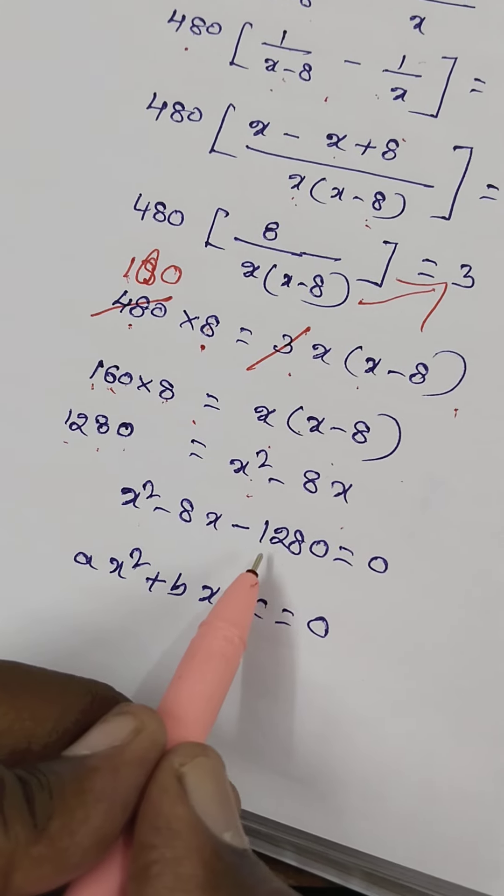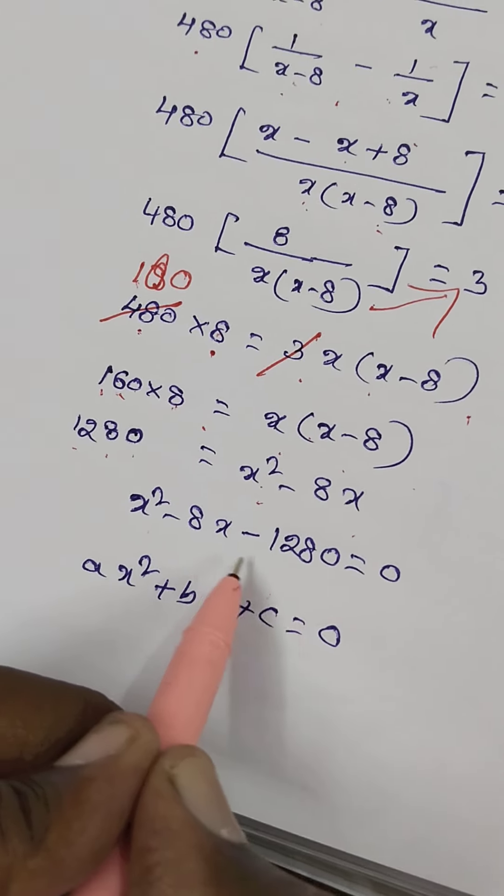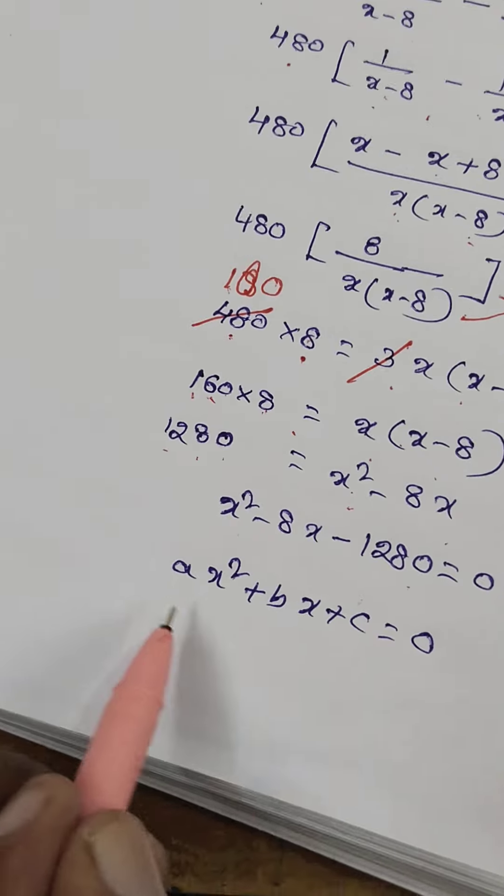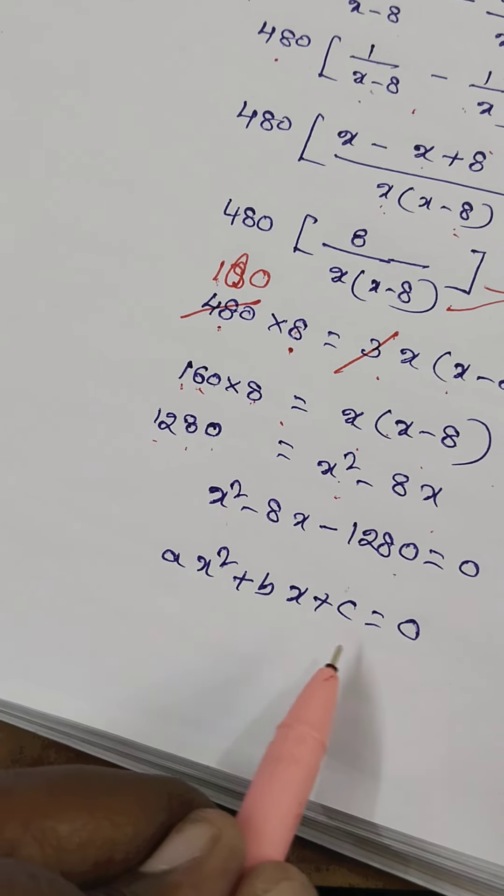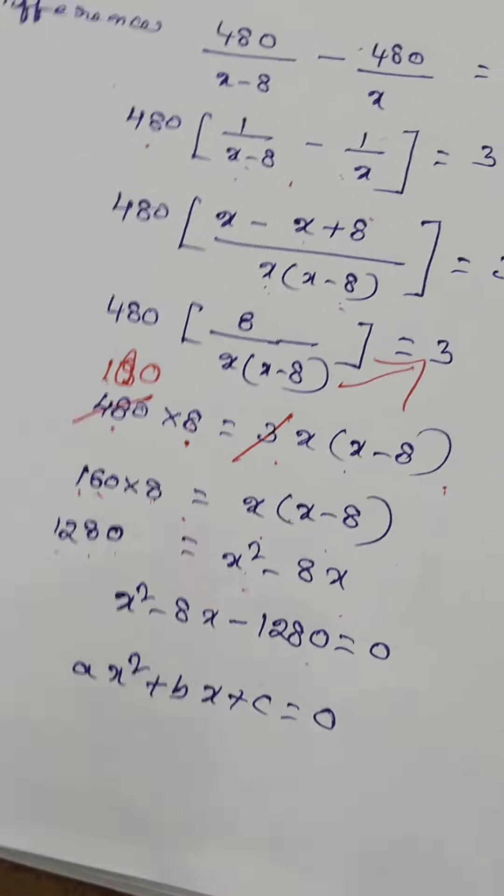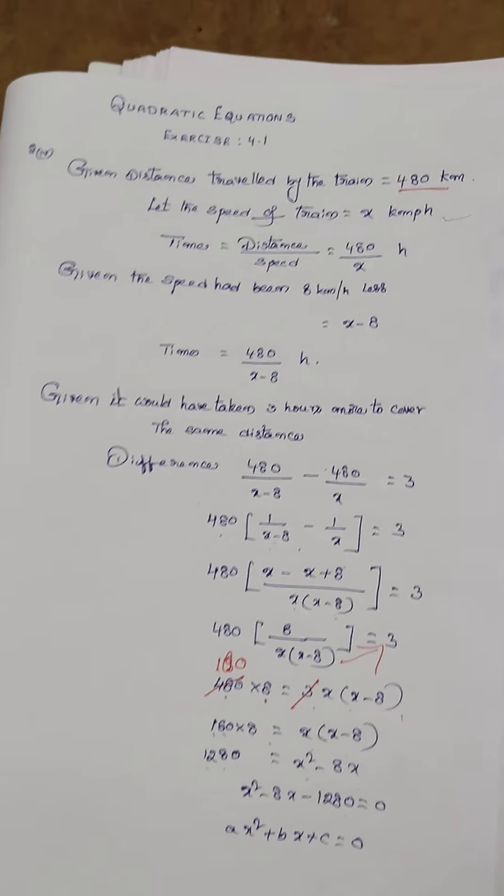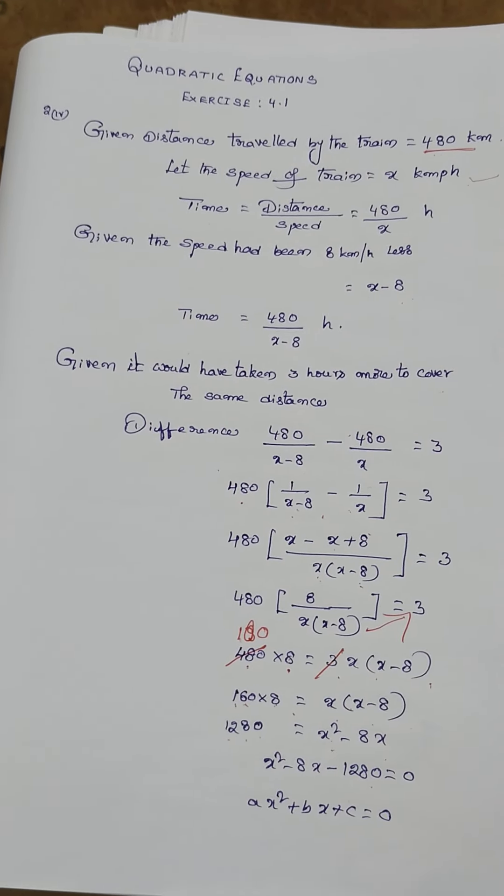x squared plus bx plus c equals 0. This is the quadratic equation form. This is problem four from exercise 4.1.